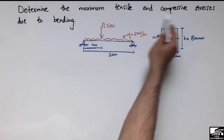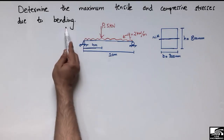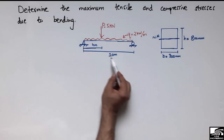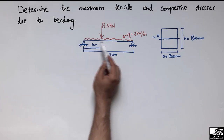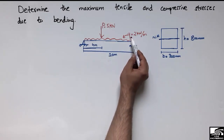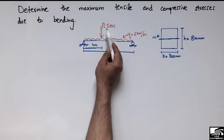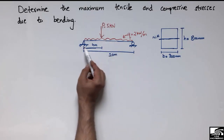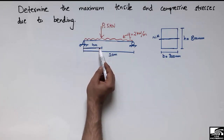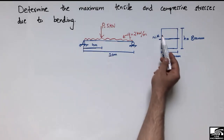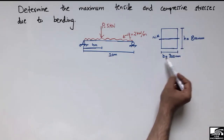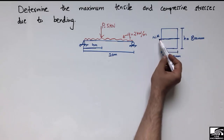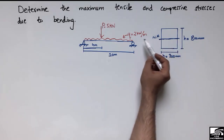The problem states: determine the maximum tensile and compressive stresses due to bending in a simply supported beam of total length 10 meters. The beam is subjected to a uniformly distributed load of 2 kN/m and a point load of 5 kN, where the 5 kN load acts at a distance of 4 meters from the left support. The cross-section of the beam is rectangular with a width of 300 mm and a height of 800 mm.